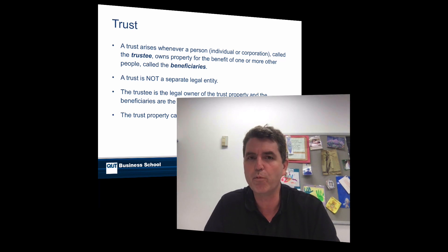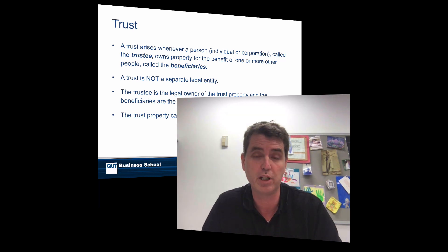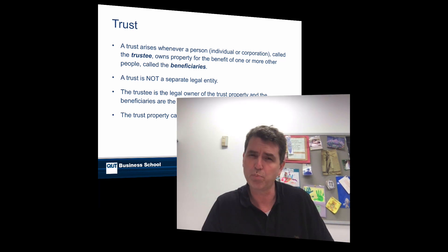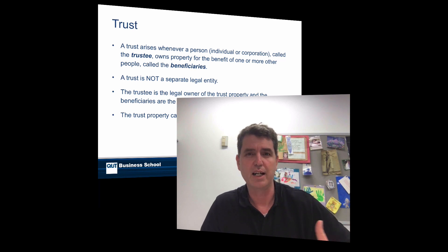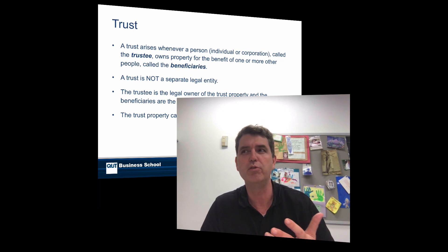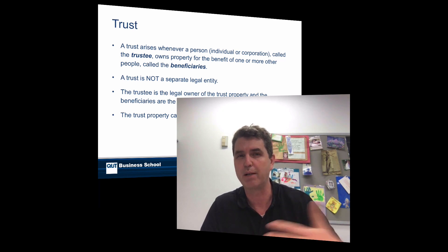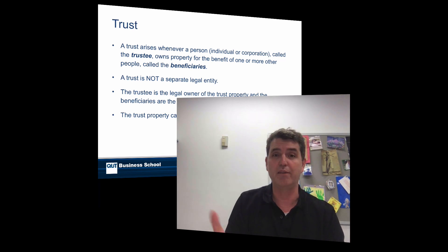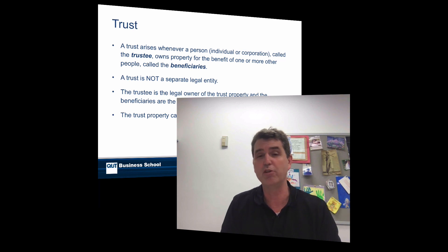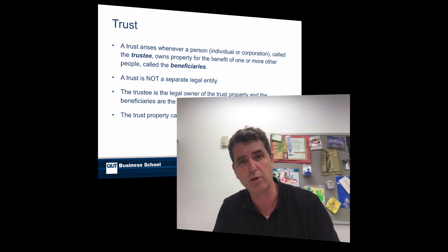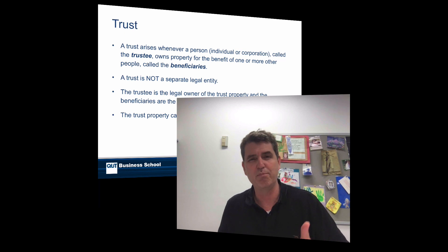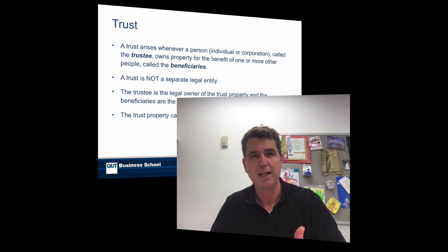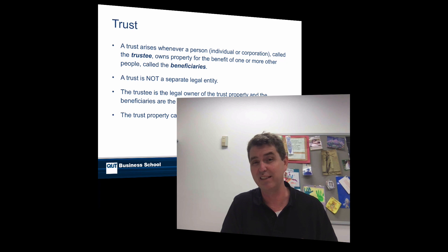They go back to a time when only certain people could own property. For instance, often women couldn't own property. So there was this problem: if you wanted to look after someone who couldn't own property, or maybe who didn't have the capacity to look after property — we still have those problems today, like with our children. If their parents die and we want to leave them property, you can't leave it to a two-year-old. So how do you get them to have property and be looked after without totally relying on giving it to someone else?